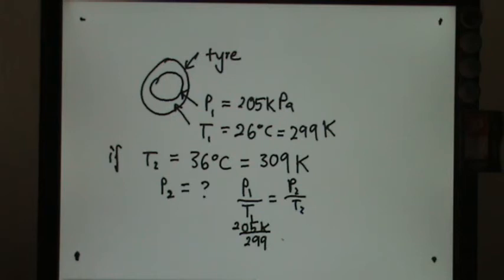Over 299 equals P2, which is unknown. And then you have T2 equals 309.